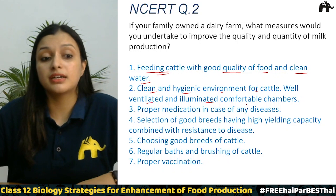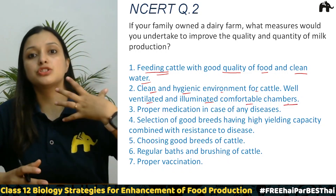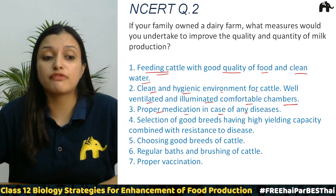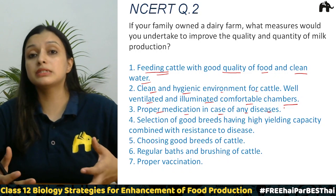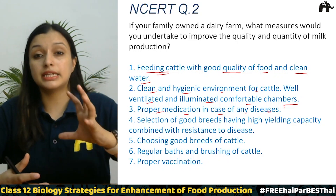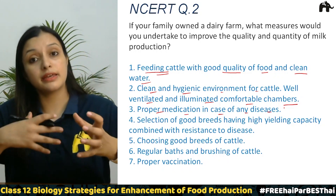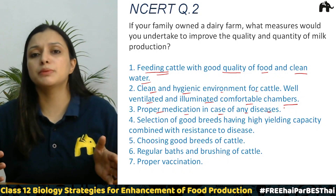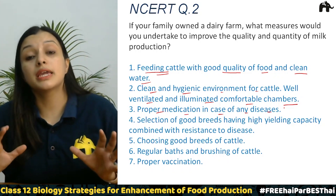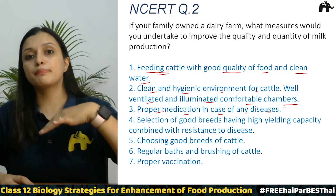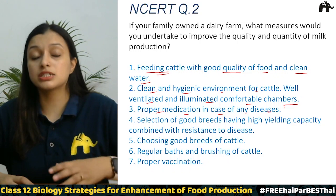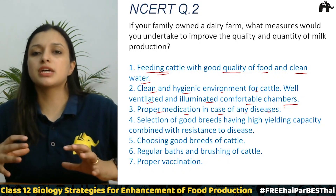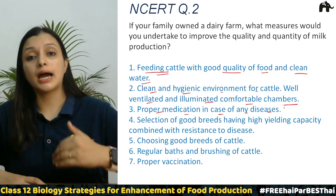Third: provide well-ventilated and well-illuminated comfortable chambers for the animals. Fourth: proper medication — in case of any diseases, animals can be affected by microorganisms just as humans and plants are. So animals must receive proper vaccination against certain diseases like tuberculosis, cholera, BCG, and tetanus — vaccinations must be given from time to time.